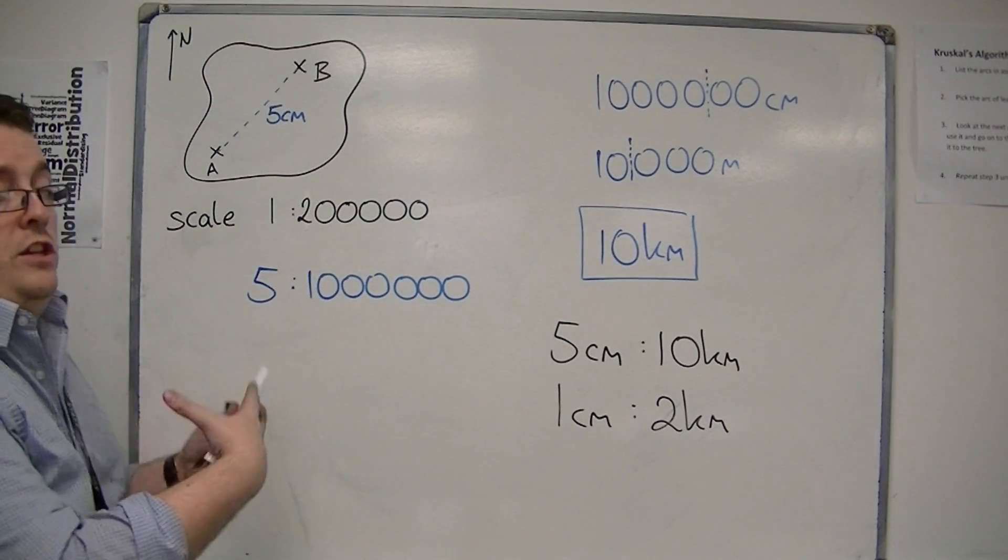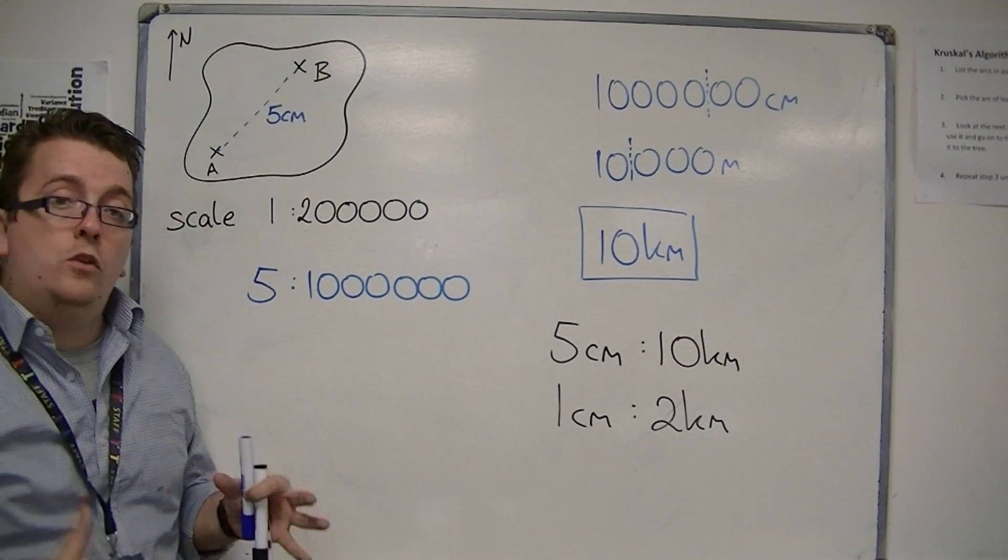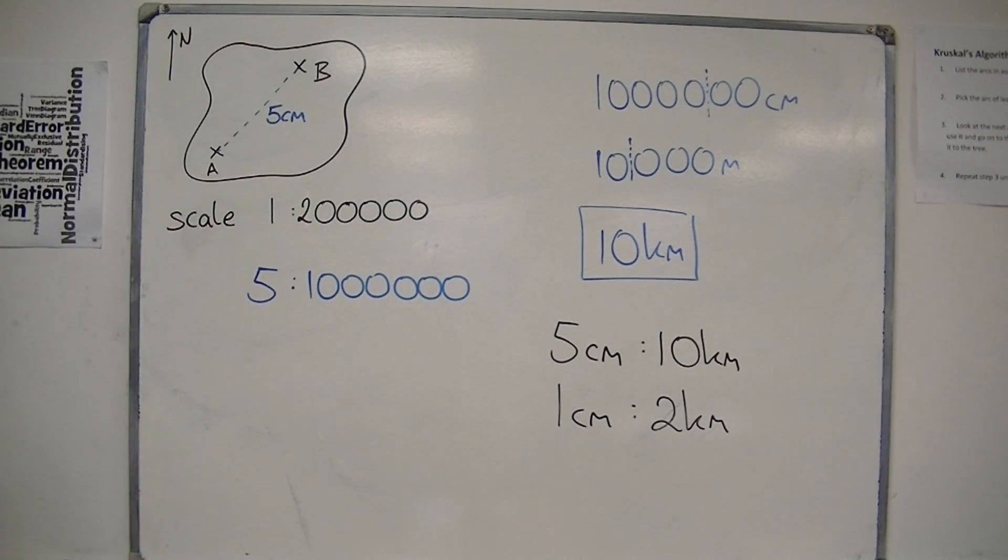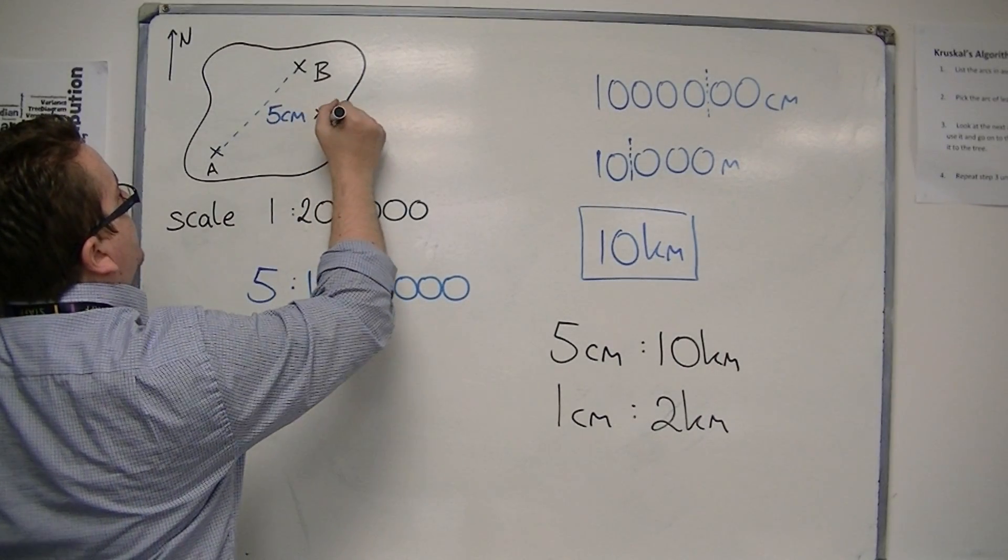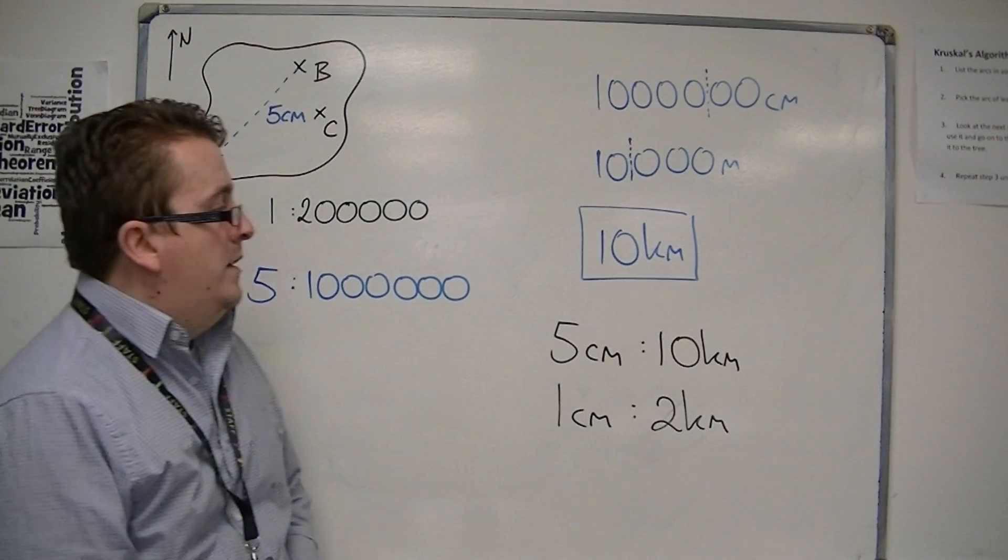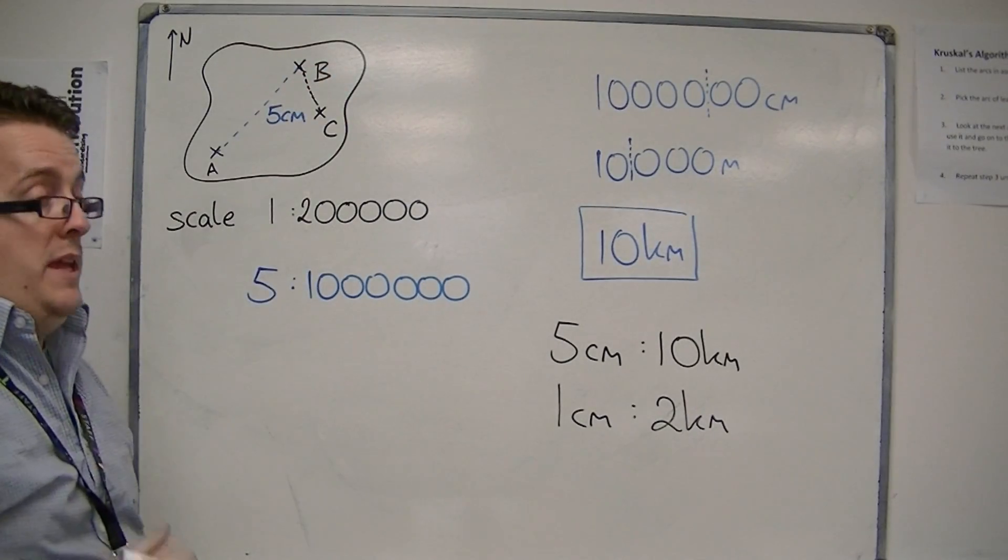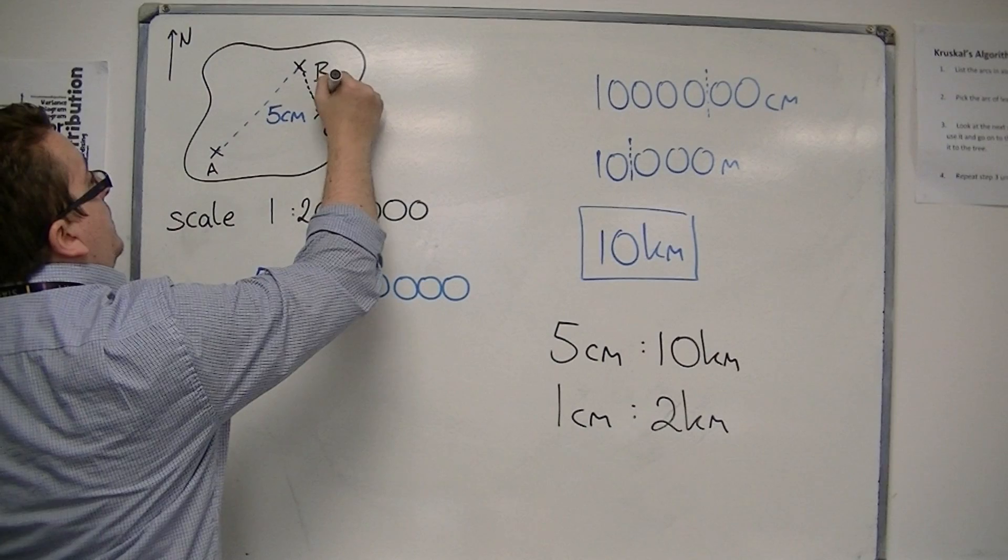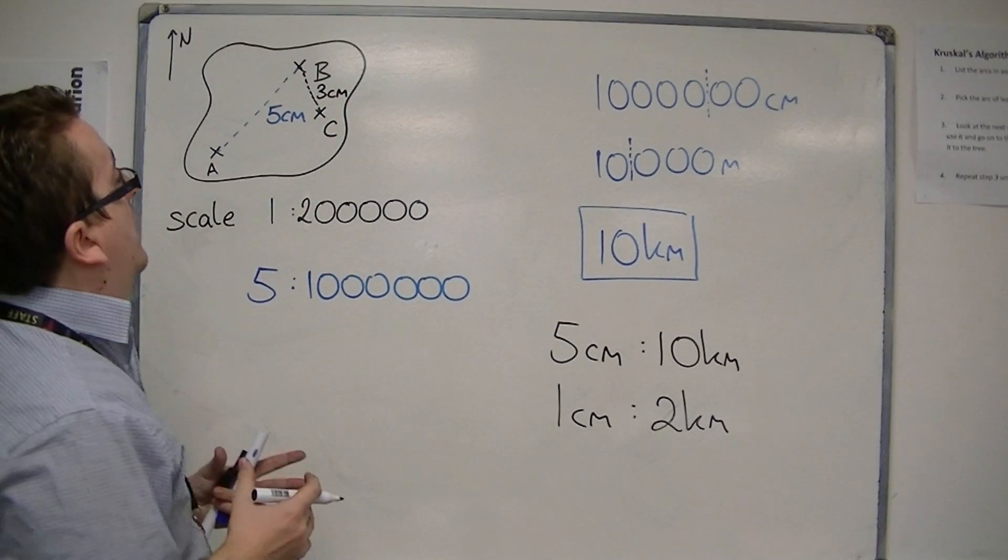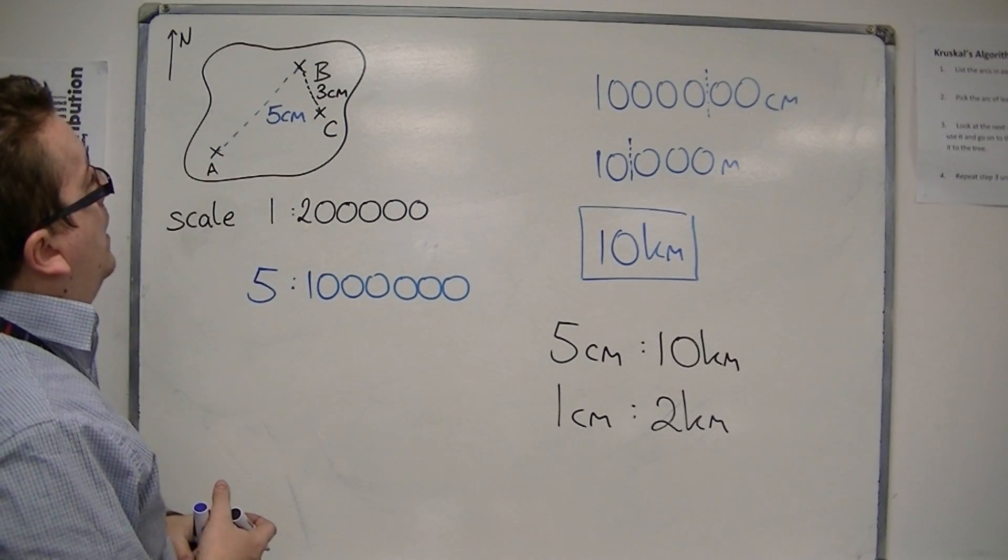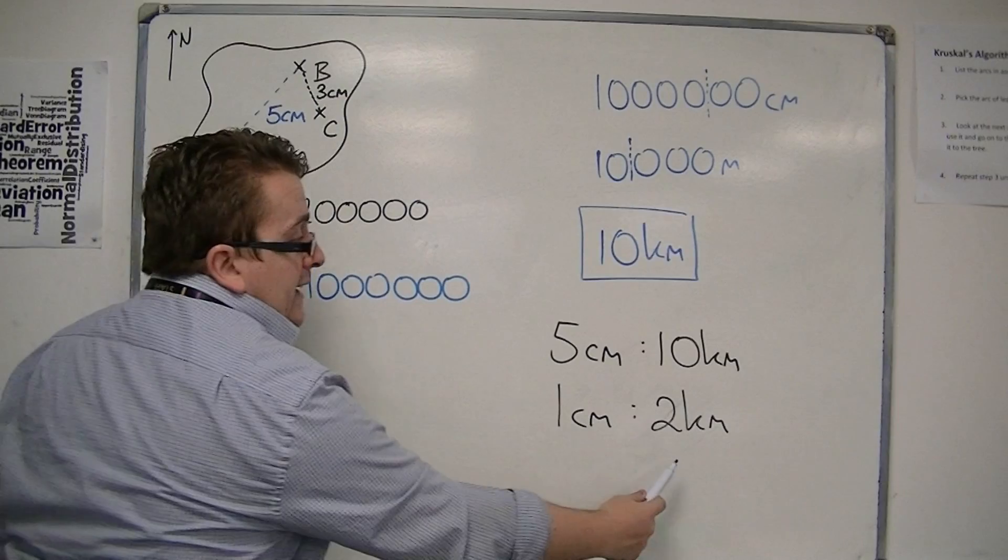So that is how we can use ratio to determine how far distant two towns actually are on a map. So let's say we've got another town, town C. Now, town C, if I measured it from town B, is actually only three centimetres. And I need to know, or I want to know, how far apart town B and town C are. So I can use this ratio directly now.